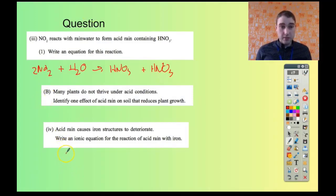We're going to start with solid iron reacting with hydrogen ions, and we're going to make Fe2+, so ferrous iron.